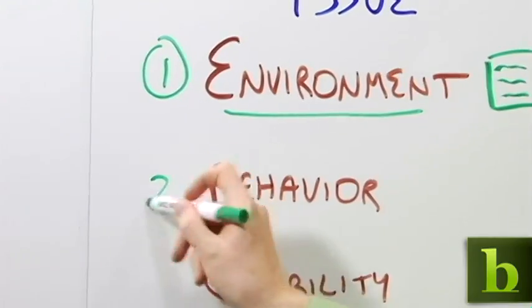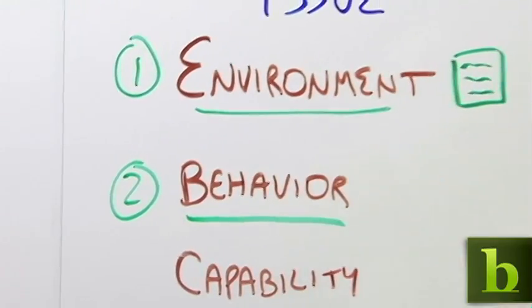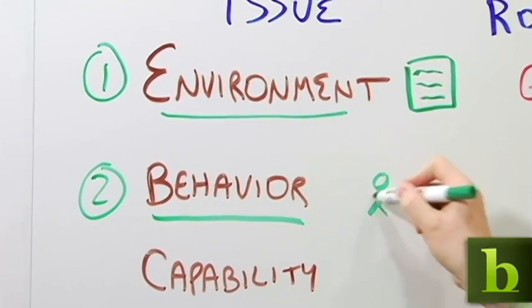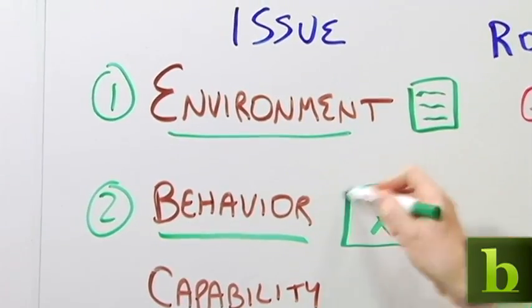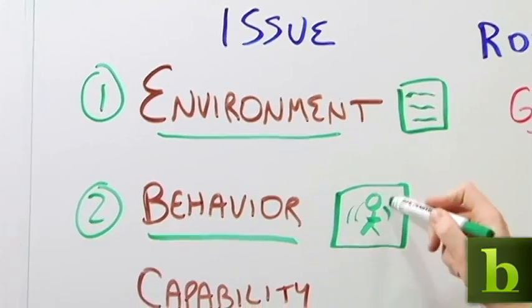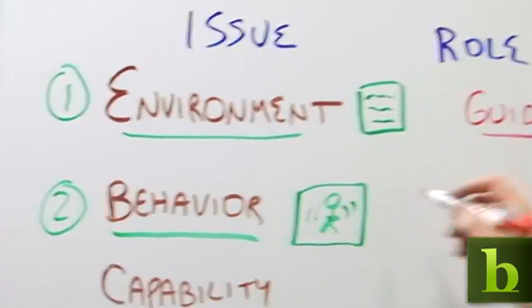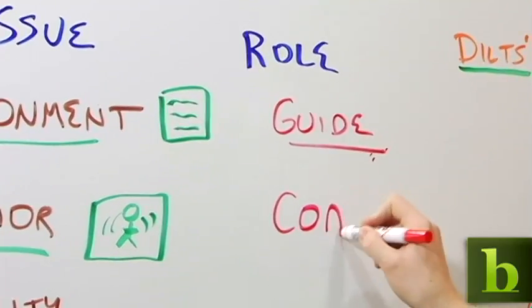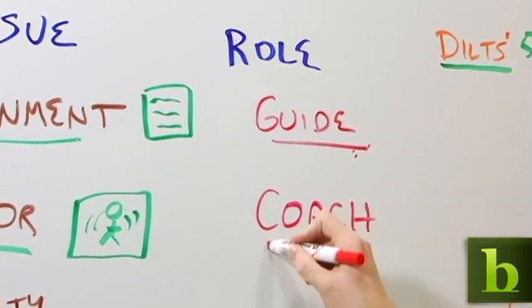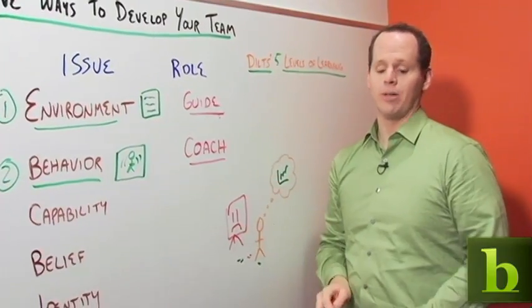The second issue is the issue of behavior. Behavior is what the person actually does. Maybe this employee spent the whole time in front of the screen, or made too many hand gestures. These are behaviors that need to be adjusted. In that case, your role is the role of a coach. You want to coach that person to behave in a different way.